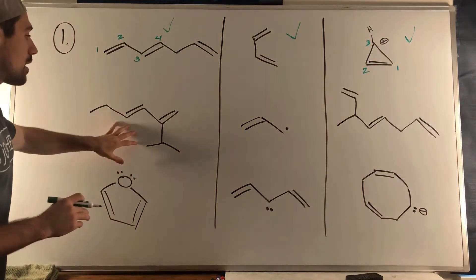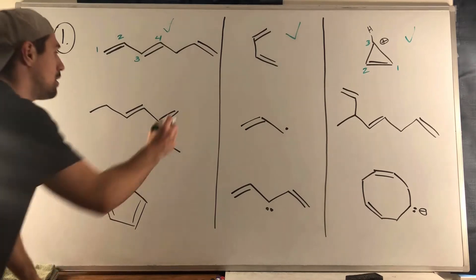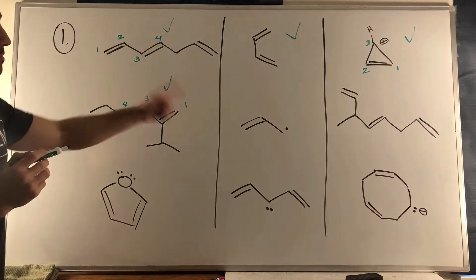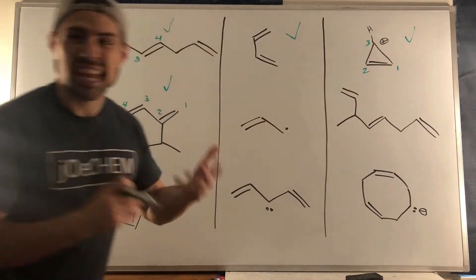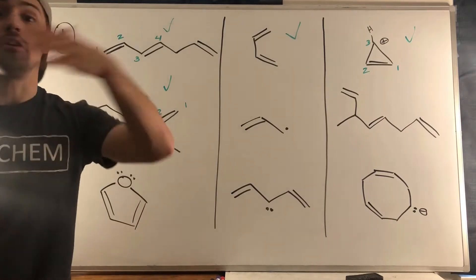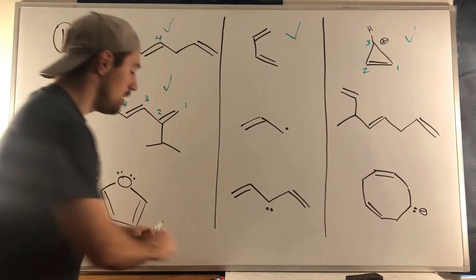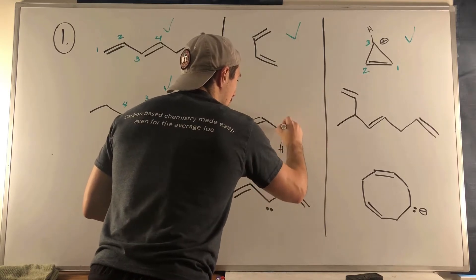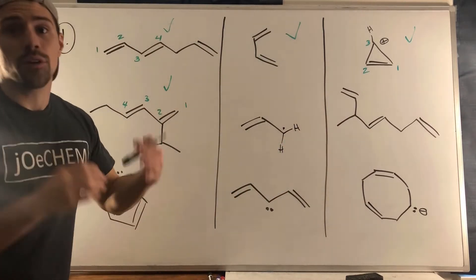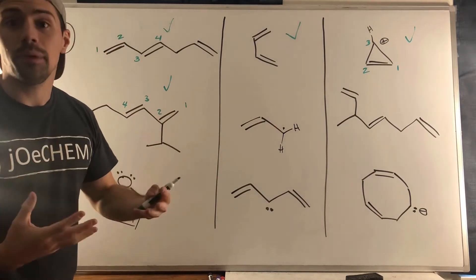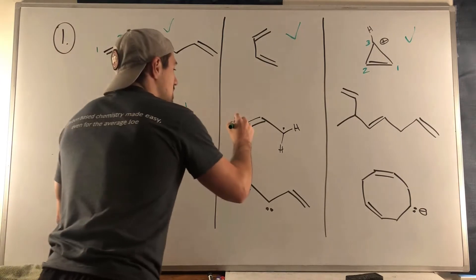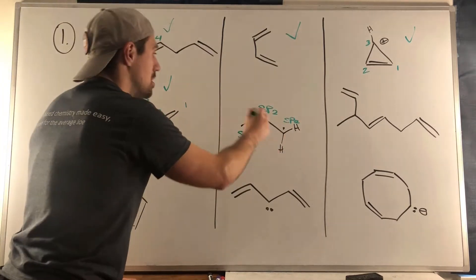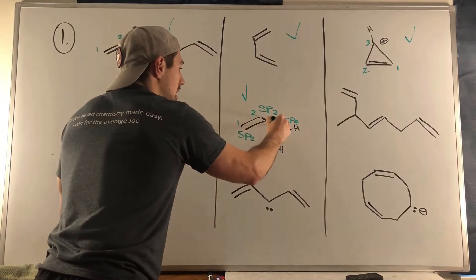Moving right along, this one is also conjugated — we see a network of four sp2 atoms. This next structure is similar: this carbon has a radical, and radicals house their one unpaired electron in a p orbital, making that carbon sp2. So we see sp2, sp2, and the radical carbon is sp2 — we have three parallel p orbitals, giving us a three-atom conjugated network.